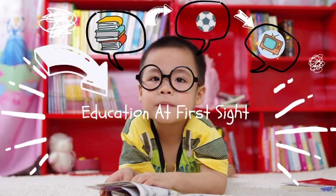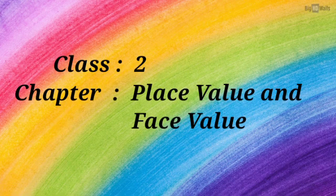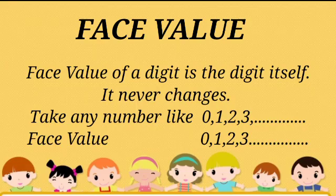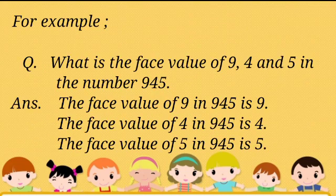Hello everyone, welcome to my channel Education at First Sight. Class 2, Chapter: Place Value and Face Value. Let us first know about face value. The face value of a digit is the digit itself — it never changes. For example, take any number like 0, 1, 2, 3, and so on; the face values will be 0, 1, 2, 3, and so on.